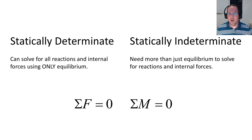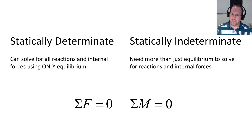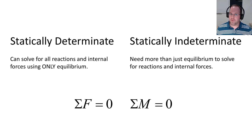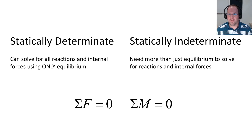When we talk about equilibrium, we're talking about sum of forces equal to zero and sum of moments equal to zero. In three-dimensional space, this is six equations: three force equations and three moments. In this case, we'll be dealing exclusively with two-dimensional structures, so we'll have two force equations — sum of forces x and sum of forces y — and one moment equation: sum of moments about the z-axis.